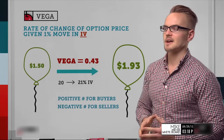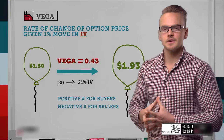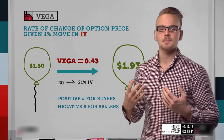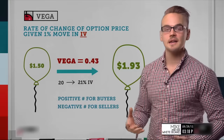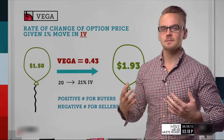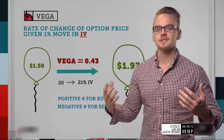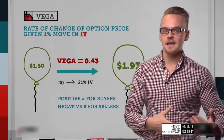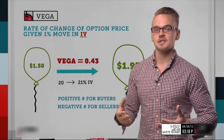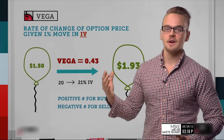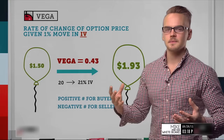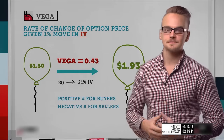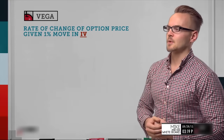One thing to keep in mind is that Vega is positive for buyers and negative for sellers. When you're buying options or buying debit spreads, it's going to be a positive number. When you're selling options, it's going to be negative. The more trades you have selling options, the more sensitive your Vega will be — a larger negative number. Conversely, a lot of long positions will give you a very high positive Vega.